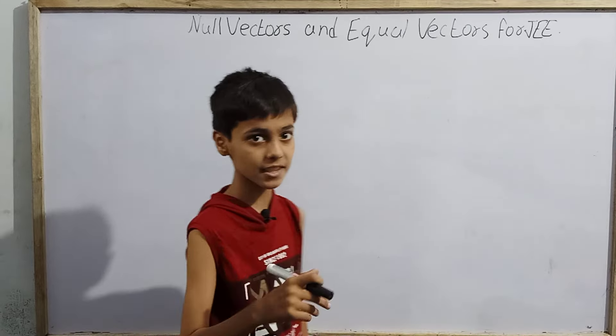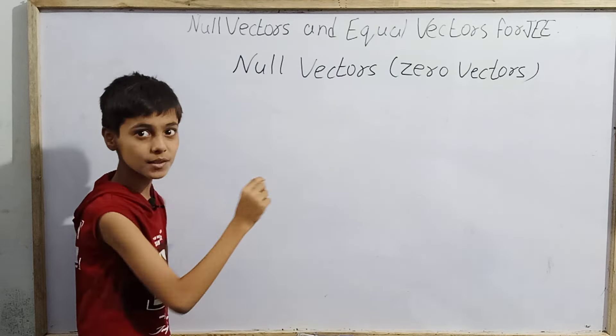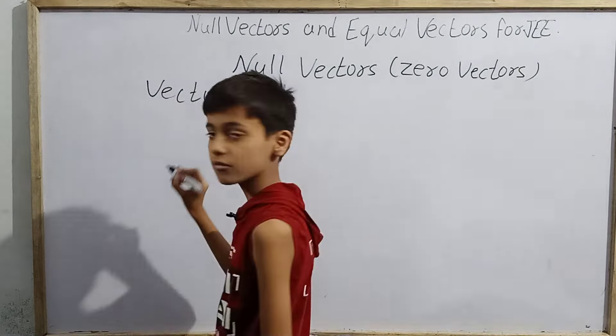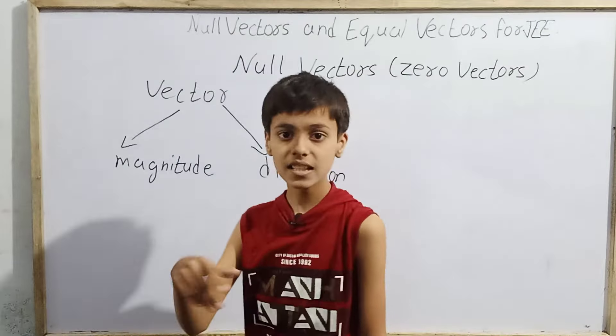But how is it possible to have magnitude zero and no specified direction for a vector? That's the main interesting point in this chapter — we study about such a vector that really is not a typical vector. Any vector quantity has two components: magnitude, and direction. That is what makes vector quantities like velocity and displacement different from scalar quantities.